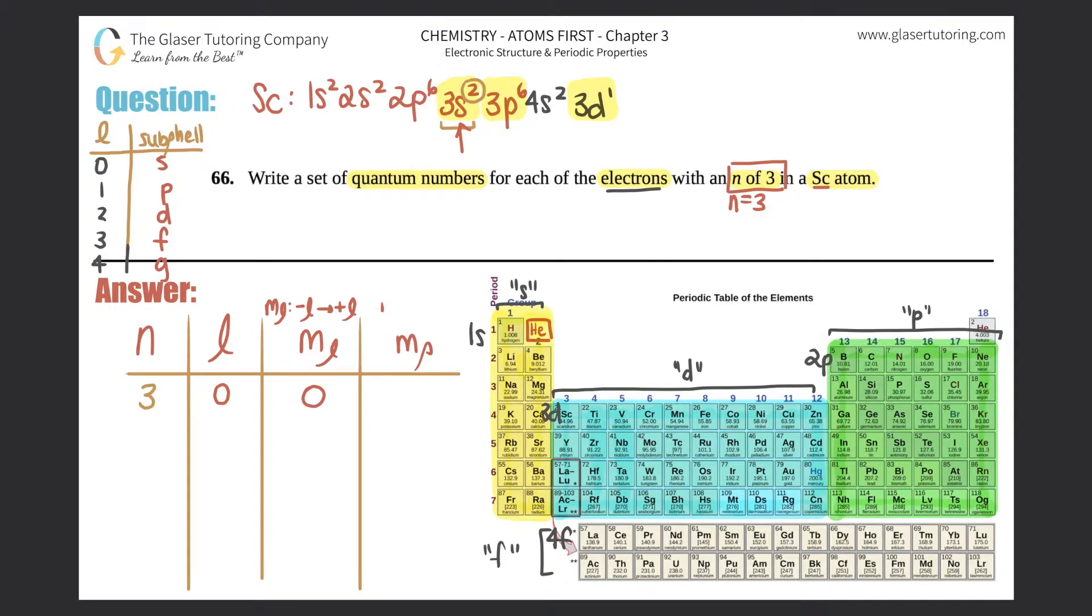And remember, the ms is either a plus 1/2 or a minus 1/2—that equates to the two electrons. That's the two here. So the first electron would be either one of the two, so either plus 1/2 or minus 1/2. But then the other electron would be the same numbers because it's still the s orbital. So it'd be still n equals 3, l is 0, ml is 0, and then it would be a negative 1/2. And that gets rid of these two electrons in the 3s² subshell or the 3s subshell.